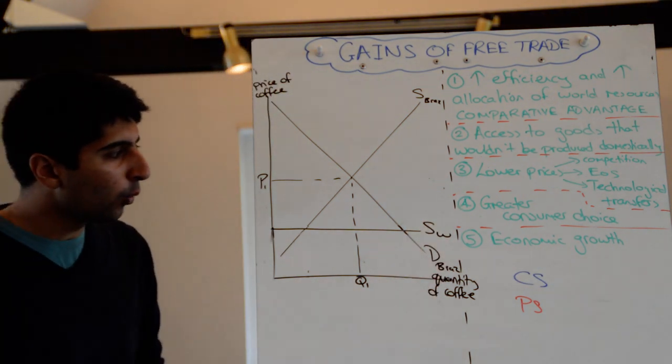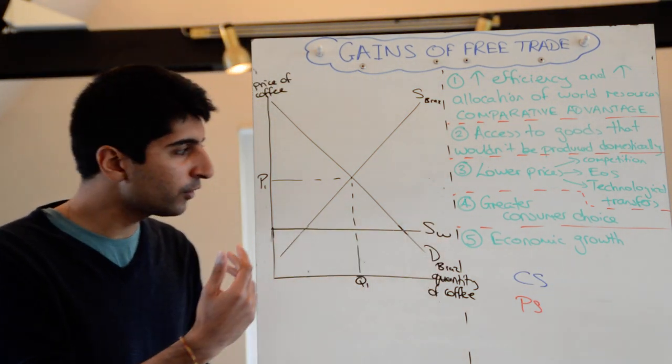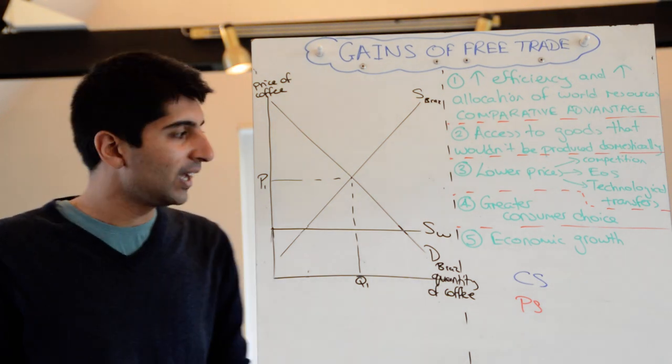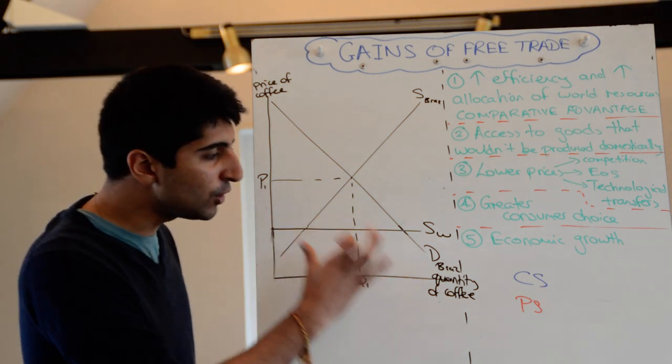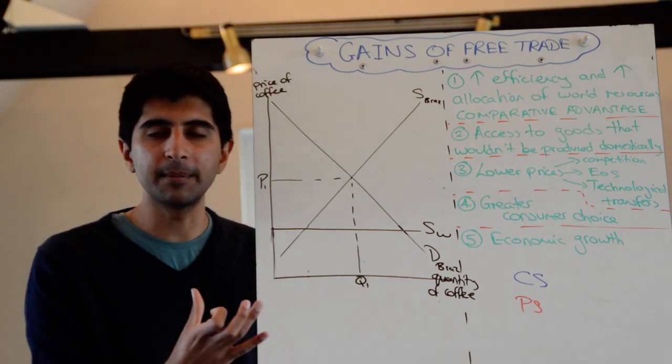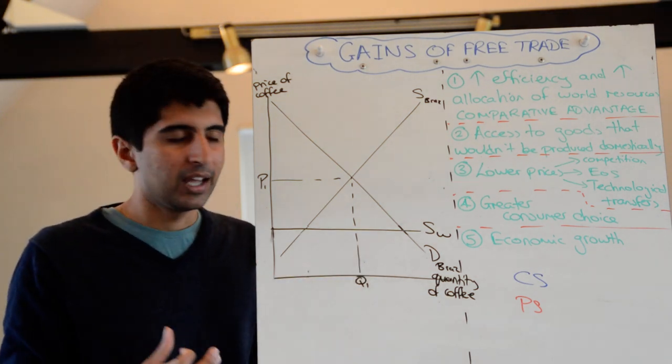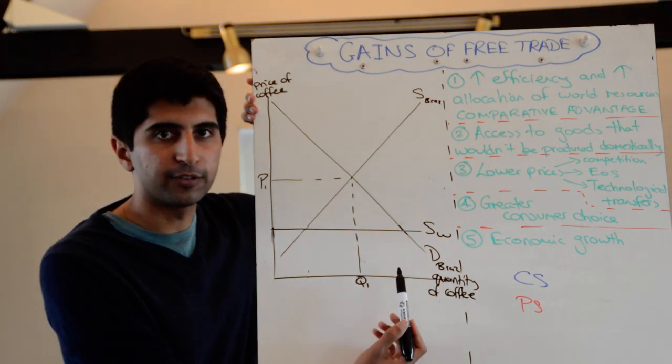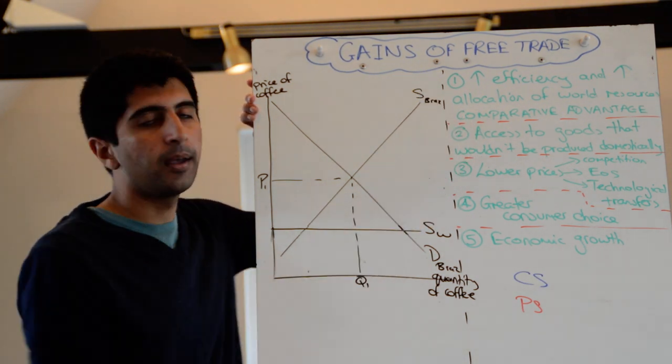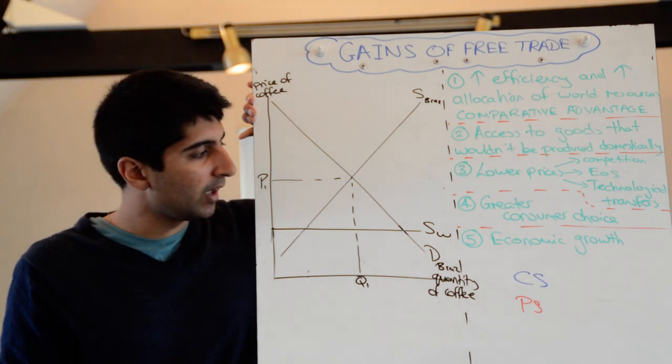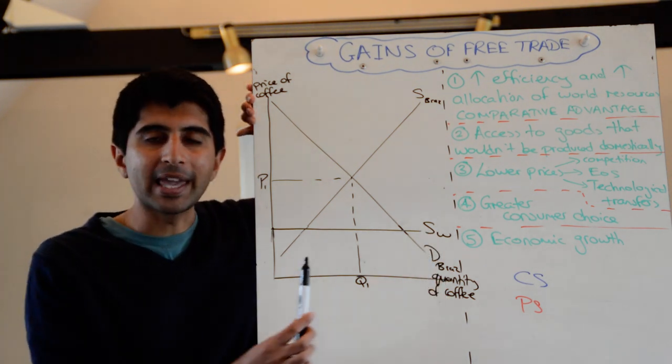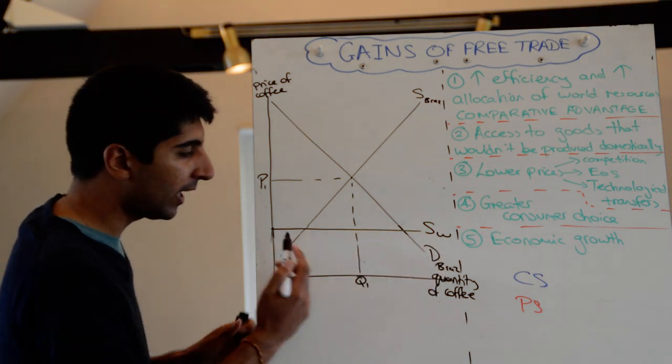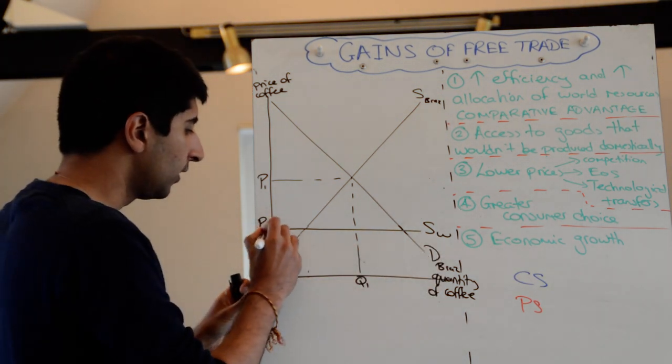Why have I drawn it horizontal? I've drawn it horizontal because world supply is so large that actually for world suppliers to produce the quantities in just the Brazilian market is so easy that world suppliers don't need increases in price to actually supply greater levels of quantity, like domestic Brazilian suppliers do. World suppliers, we're assuming, have the comparative advantage, which implies that they can sell at a lower price called PW.